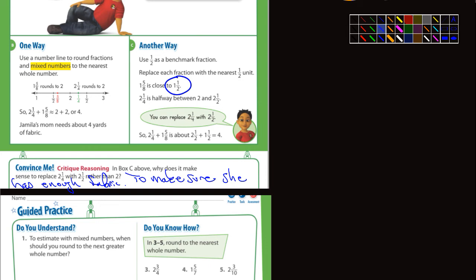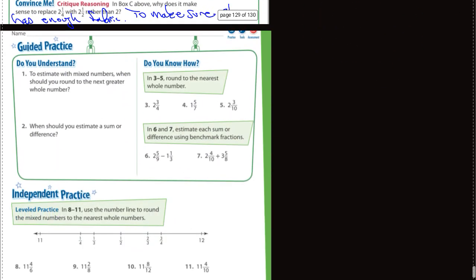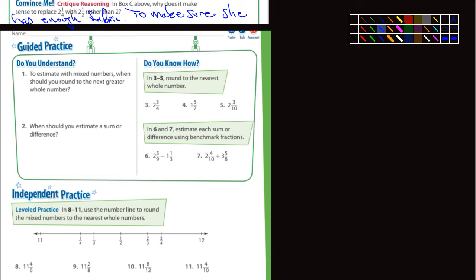Let's see here. Guided practice. To estimate with mixed numbers, when should you round to the next greater whole number? That would be when the fraction part is greater than or equal to 1/2.